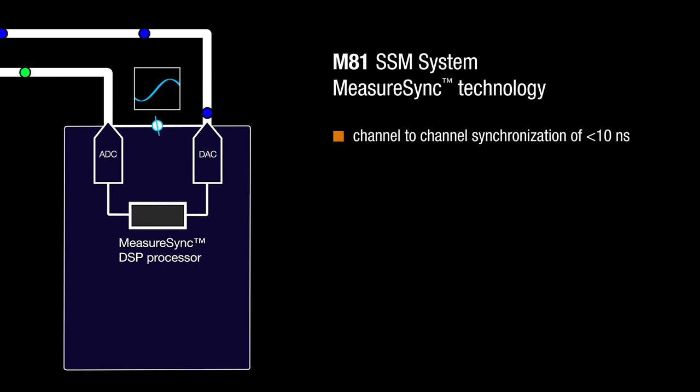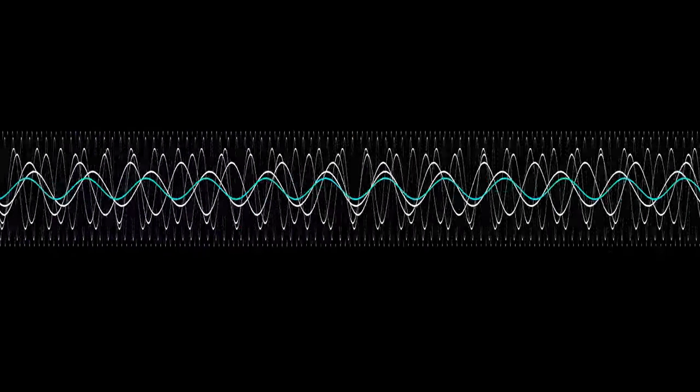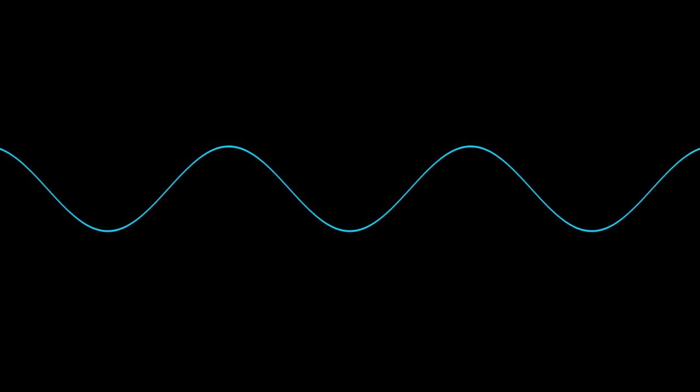With channel-to-channel synchronization of less than 10 nanoseconds and a sampling update of 375 kilohertz, all signals are synchronized in a way never before possible, ensuring phase-sensitive lock-in measurements are precise and accurate.